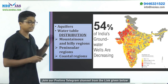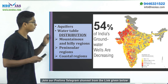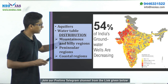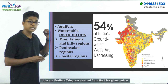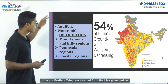This picture shows the red-marked regions where groundwater is being exploited or depleted. Especially in regions like Punjab, Haryana, Rajasthan, and some parts of Karnataka and Andhra Pradesh, we are seeing depleted amounts of groundwater.